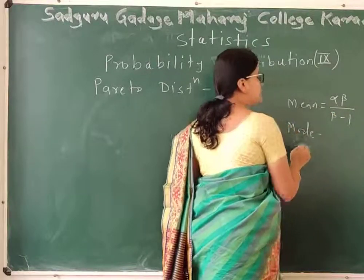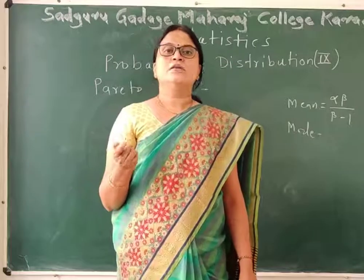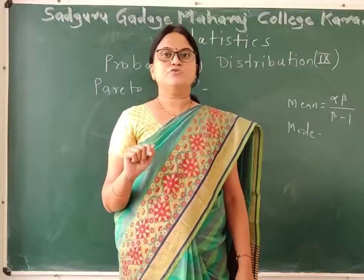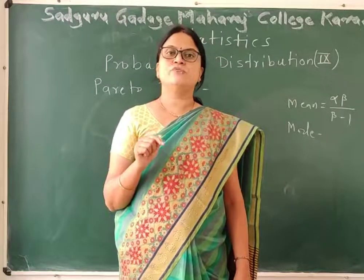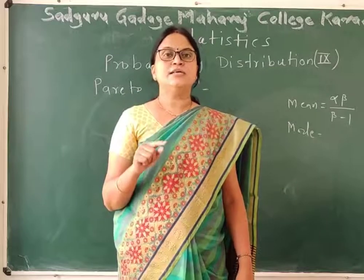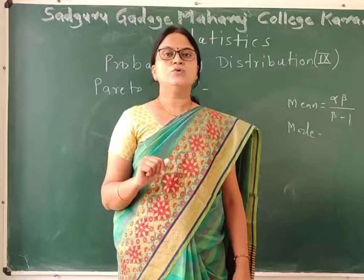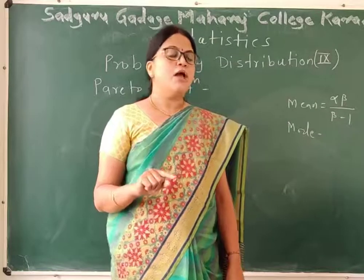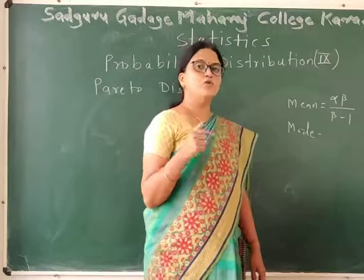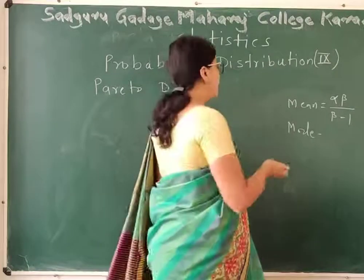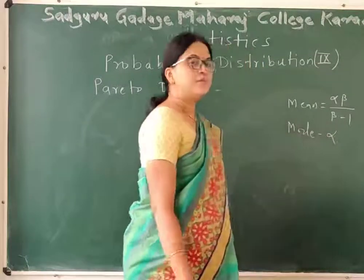Since the range of Pareto distribution — that is, the range of X — depends on one of the variables, which is alpha, we cannot find the value of mode analytically. Hence, we can find the value of mode from the graph, and the value of mode is alpha.